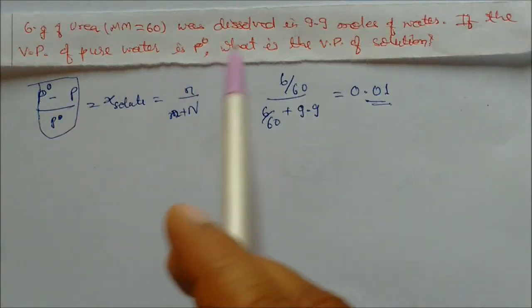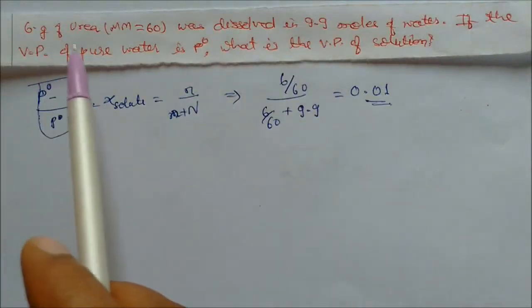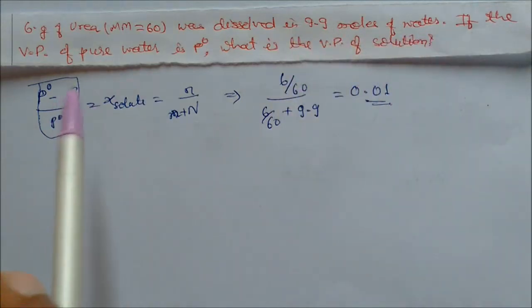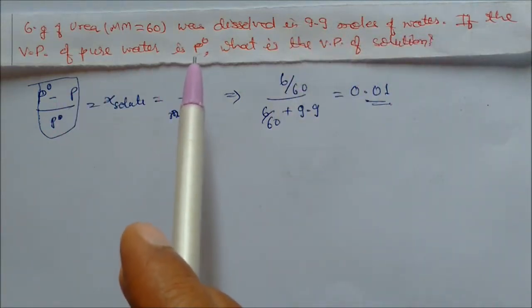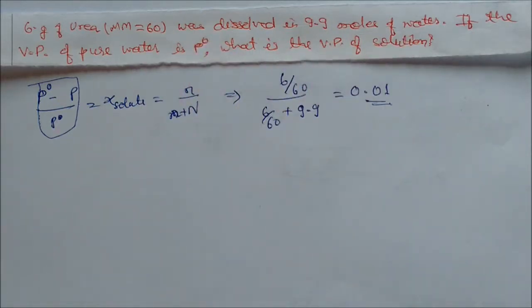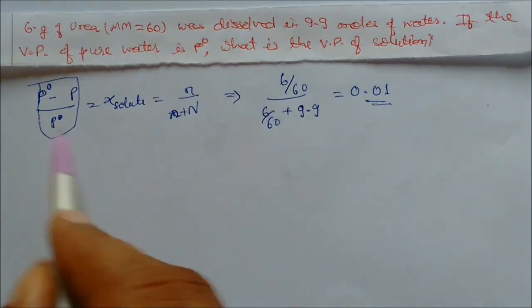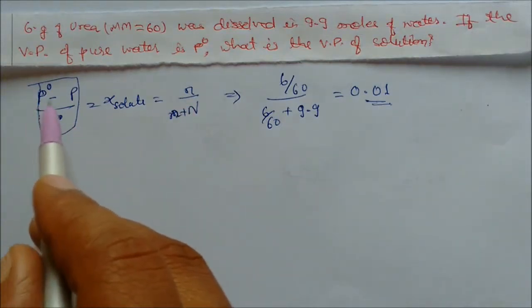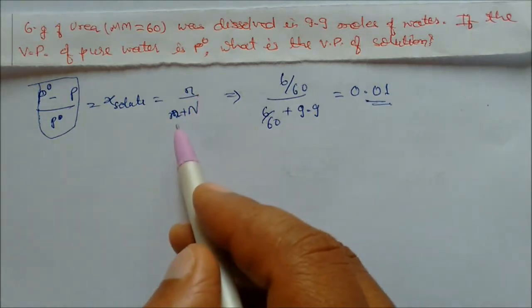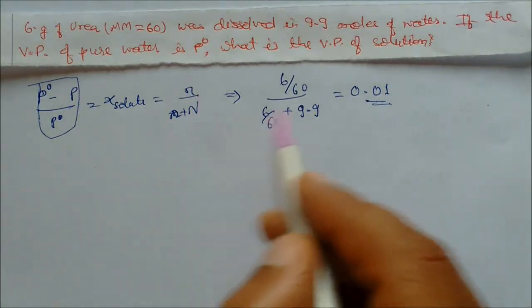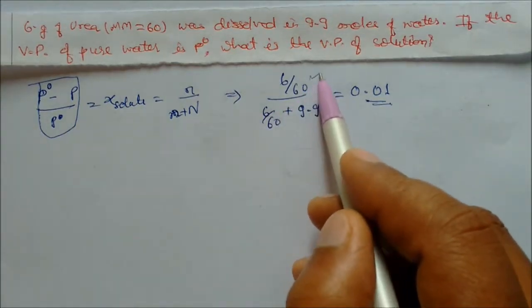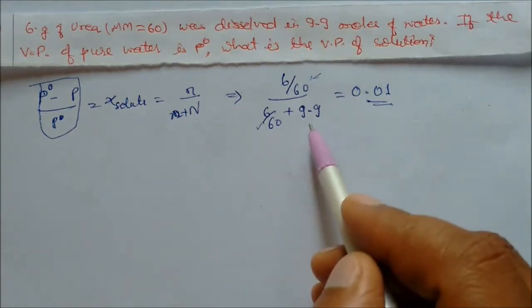The problem is based on lowering of vapor pressure. 6 moles of solute is dissolved in 99 moles of water. If the vapor pressure of pure water is P naught, what is the vapor pressure of the solution? This is based on the formula for lowering of vapor pressure: P naught minus P by P naught equals X solute, which is moles of solute divided by moles of solute plus moles of solvent.